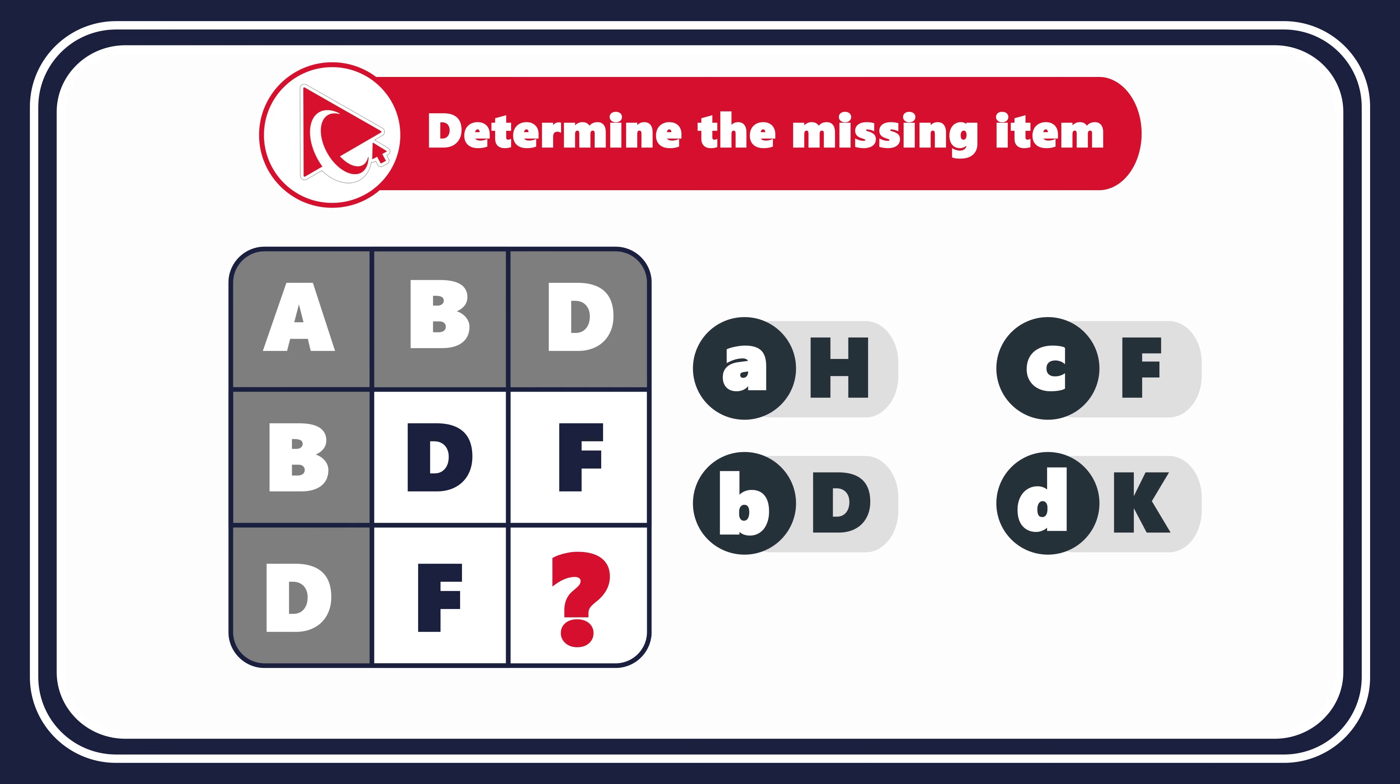The first row has letters A, B, and D. The second row has letters B, D, and F, and then the third row has letters D, F, and then comes the missing letter which you need to select out of four possible choices.